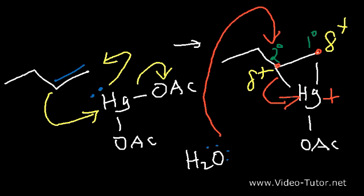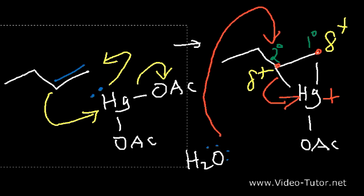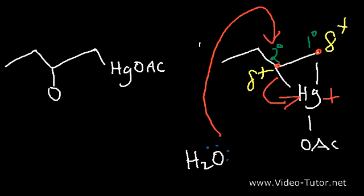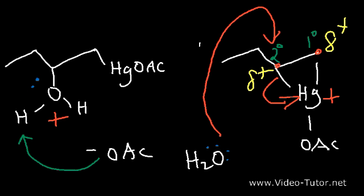Let's draw the product of that result. Now the mercury atom is only attached to the primary carbon, and we have a protonated OH group on the secondary carbon. We need to use the other acetate ion that was expelled — this acetate ion is a weak base, and it's going to grab a hydrogen, giving us our intermediate.